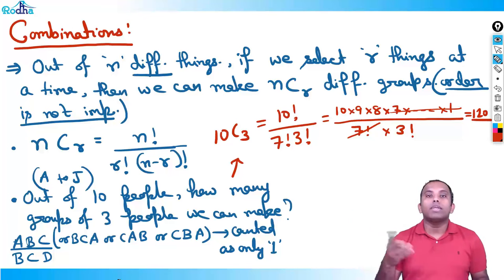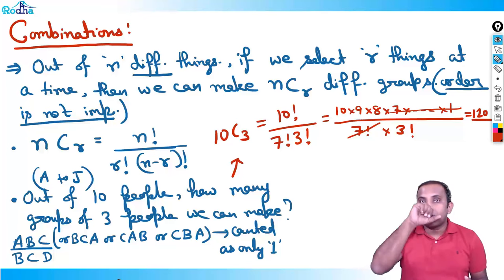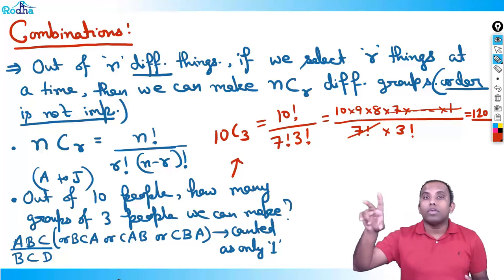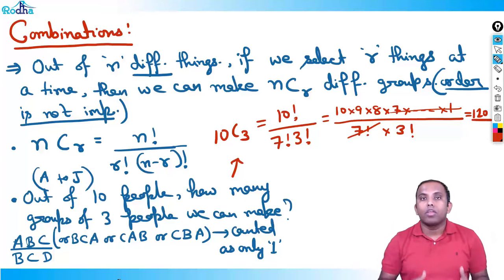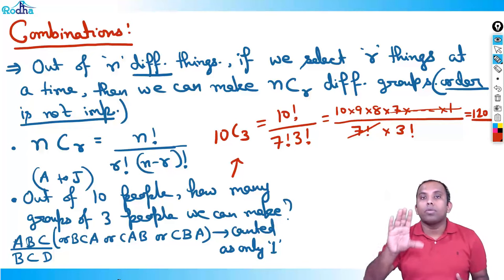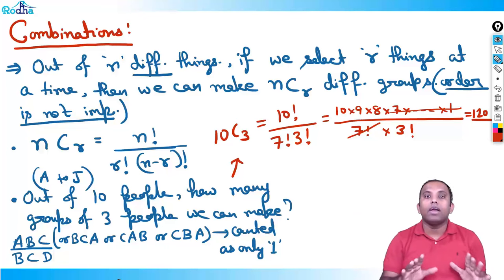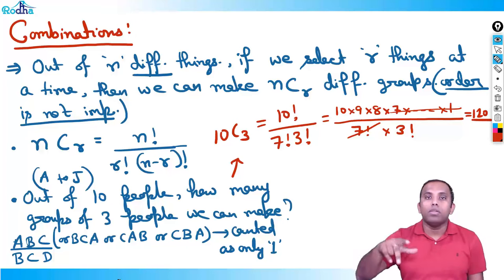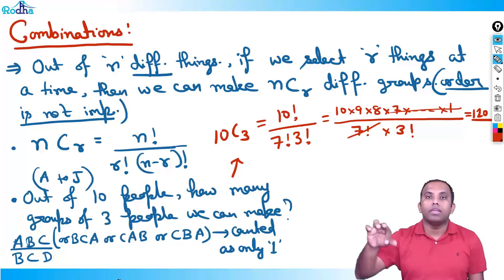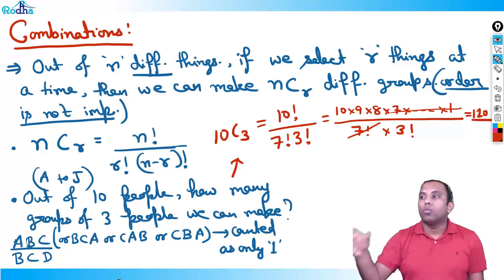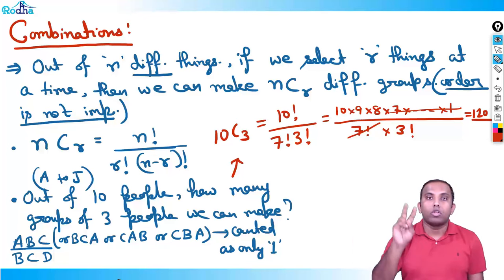Another example: out of 20 people, how many groups of 2? Answer is 20C2. Every group of 2 is counted as one — A, B and B, A are the same group. No shuffling in combinations. 20C2 = 20! / (18! × 2!) = 20 × 19 / 2 = 190.